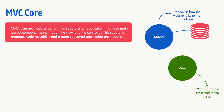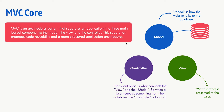The Model is how your website is going to talk to a database or whatever the data source is. Then you have the last component, the Controller. The Controller connects the View and the Model together. When a user requests something from the database, the Controller takes the request, displays a View to the user, and talks to the Model.